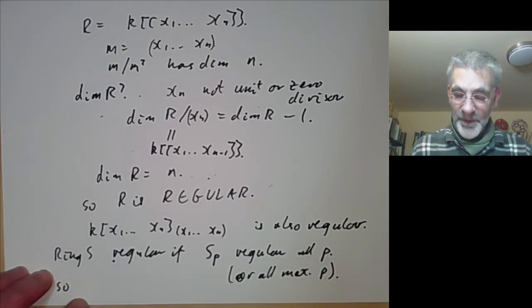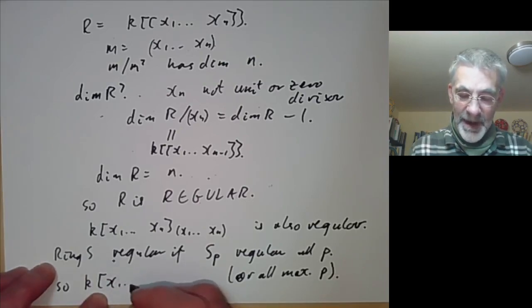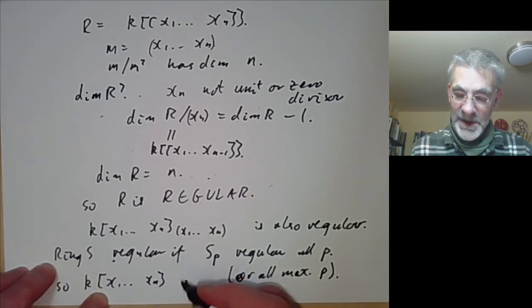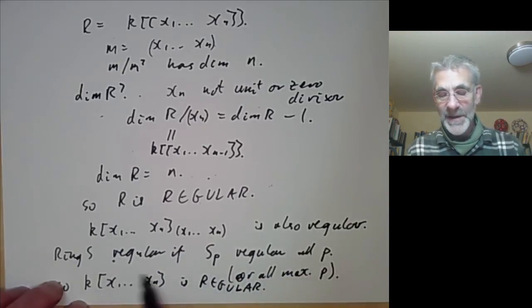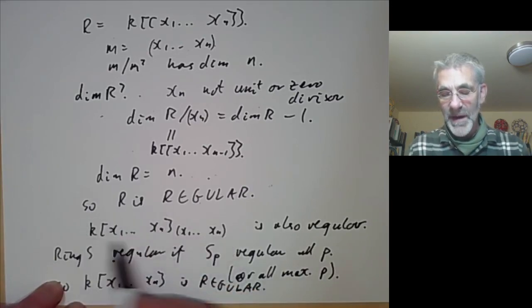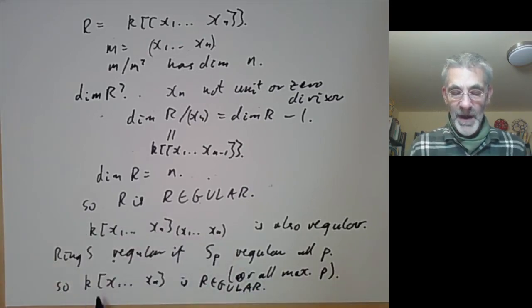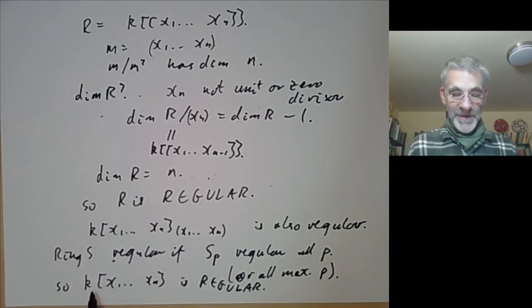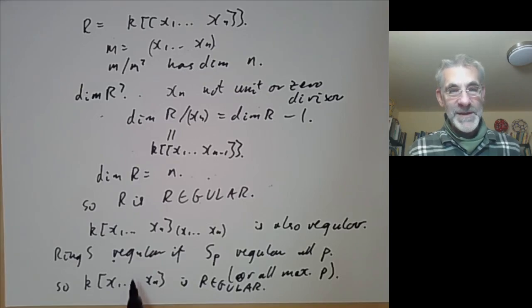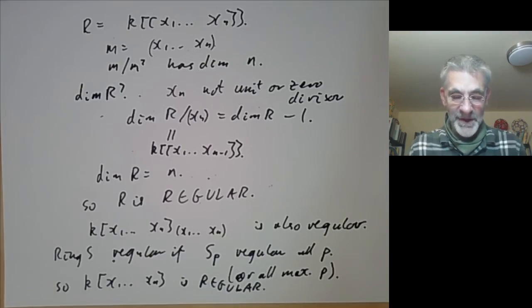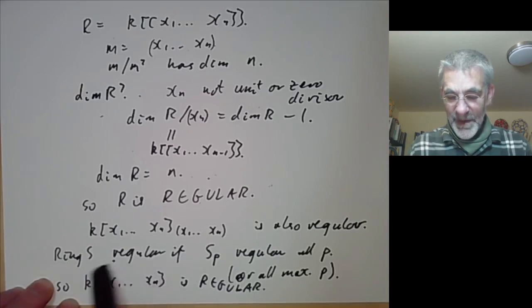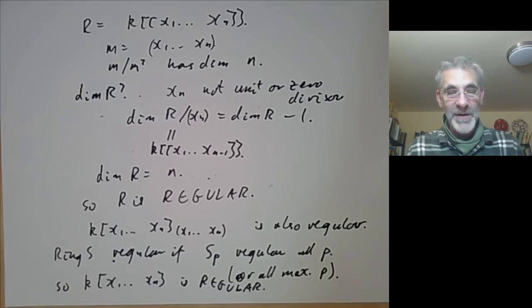We see that the ring of polynomials in n variables is a regular ring. That's because if you take the localisation at a maximal ideal, it's isomorphic to the power series ring localised at the origin, which is regular. This is just as well, because this is the coordinate ring of n-dimensional affine space, and n-dimensional affine space obviously ought to be non-singular. So our definition of regular ring does seem to behave reasonably — it gives you the non-singular points of an algebraic variety.